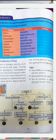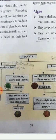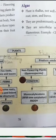Plants that do not produce seeds include algae, which have no true roots, stems, or leaves. Mosses have some root-like structures. Ferns have true roots, stems, and leaves.